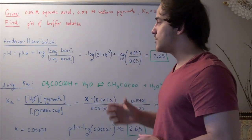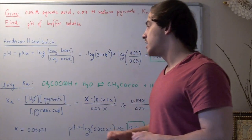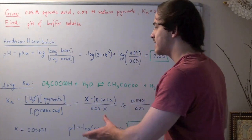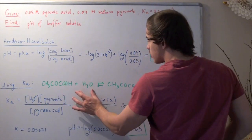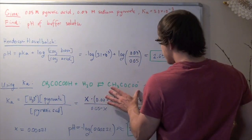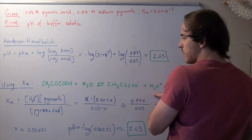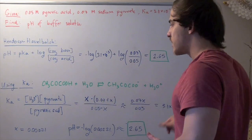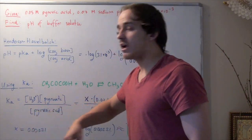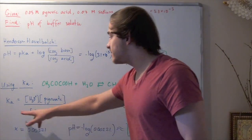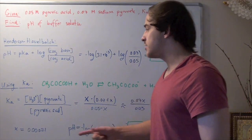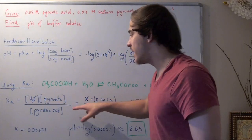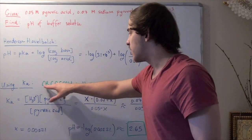Now let's find the same pH using the Ka. Remember, our equation for conjugate acid and conjugate base is conjugate acid plus water gives us conjugate base plus hydronium ion. Let's write the equilibrium equation. Ka, our acid ionization constant, equals the concentration of hydronium times the concentration of pyruvate divided by the concentration of pyruvic acid.